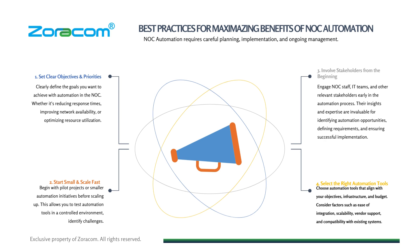Setting clear objectives and priorities guarantees your network operation center will improve network availability and optimize resource utilization. For starting small and scaling fast, begin with pilot projects or smaller automation initiatives before scaling up gradually. This allows you to test automation tools in a controlled environment, thereby identifying possible challenges before full deployment.